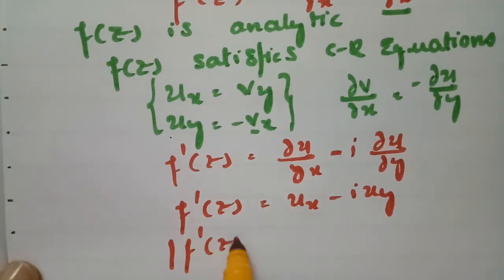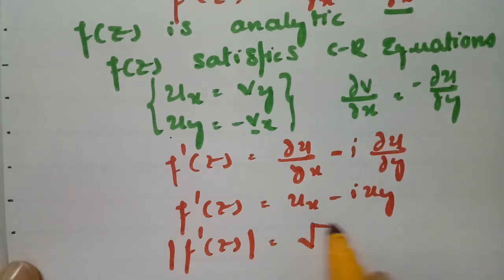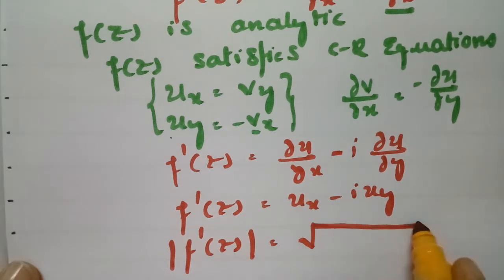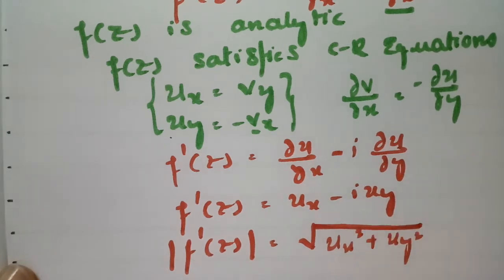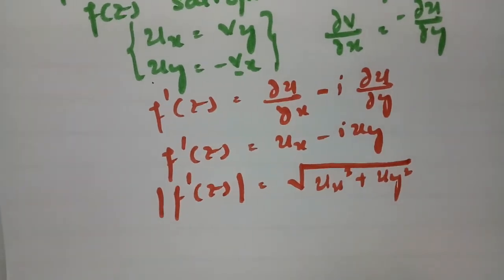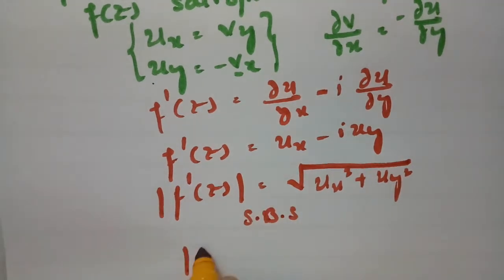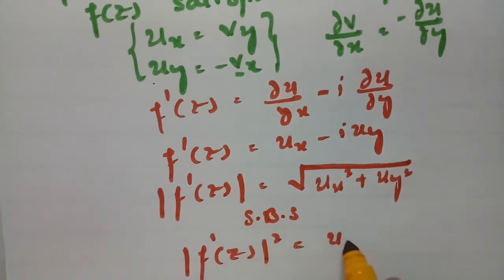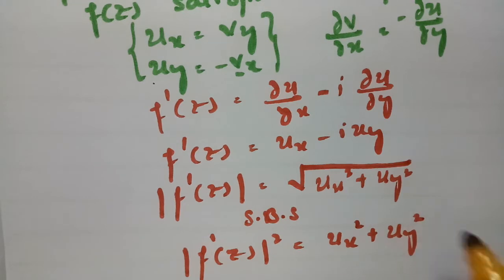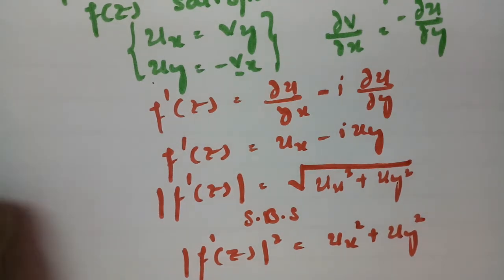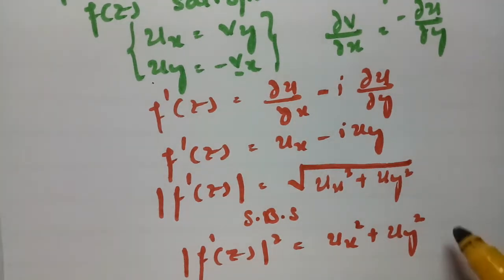Taking modulus, |f'(z)| = √(ux² + uy²). Squaring on both sides, |f'(z)|² = ux² + uy². I am going to consider this as equation number 1.